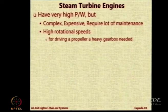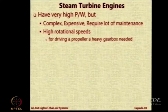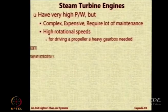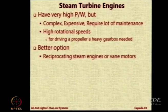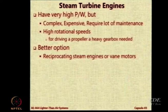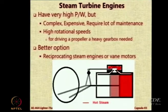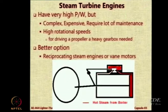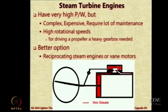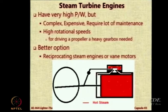Secondly, you need very high RPMs, and therefore you need a very heavy gearbox to reduce engine RPM down to propeller RPM. So a better option would be to use a reciprocating steam engine or a vane motor. Steam turbines are commonly available but would be too heavy and not as effective — so the best suggestion is reciprocating steam engines or vane motors.